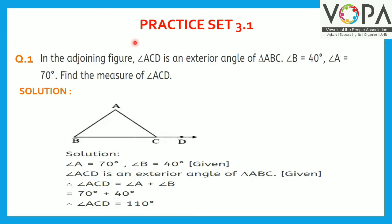Let's solve practice exercise 3.1, Question number 1. In the adjoining figure, angle ACD is an exterior angle of triangle ABC. Angle B is equal to 40 degrees and angle A is equal to 70 degrees. Find the measure of angle ACD.